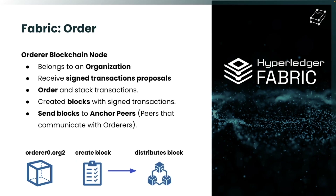There is one type of Hyperledger Fabric node responsible for the ordering phase: the orderer node. Like the peer, the orderer also belongs to one organization and has a digital certificate stored inside its components. It receives signed transaction proposals from different peers and gateways, stacks and orders all these transactions, and then creates blocks according to defined parameters.